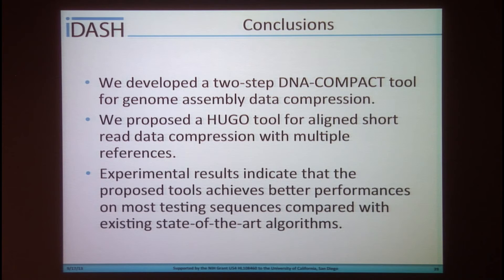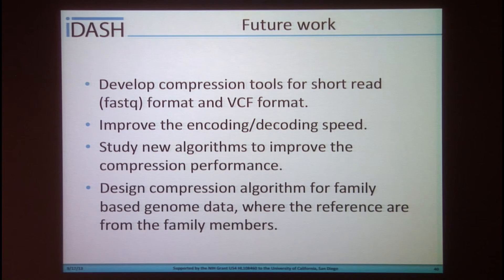In conclusion, we developed the two-step DNA Compact tools for genome assembly data compression, and proposed Hugo tools for short-read data compression with multi-reference. Experimental results show better compression performance of both proposed compression schemes compared with state-of-the-art algorithms. In our future work, we aim to develop compression tools for short reads in FastQ format and VCF format, improve encoding and decoding speed, develop new algorithms to improve compression performance, and design compression algorithms for family-based genome data using references from family members. This project is teamwork, and I would like to thank all contributors. Any questions?